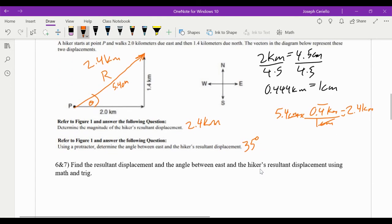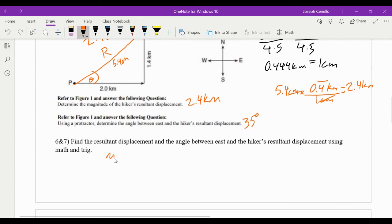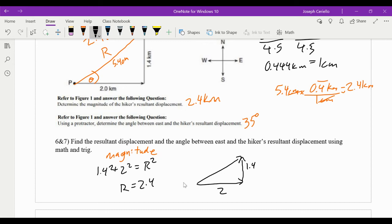Now, could we have done this with trig? Of course we could have. So to get the magnitude, to get how long it was, we don't have to measure anything. We have a little triangle. We have 2. We have 1.4. And we have our unknown. So to get this resultant here, hopefully you notice you have to use Pythagorean theorem. 1.4 squared plus 2 squared equals our resultant squared. And you should get that the resultant came out to be 2.4 kilometers.